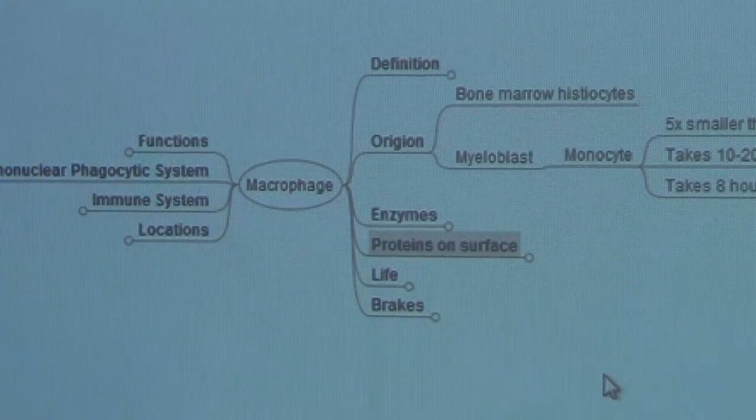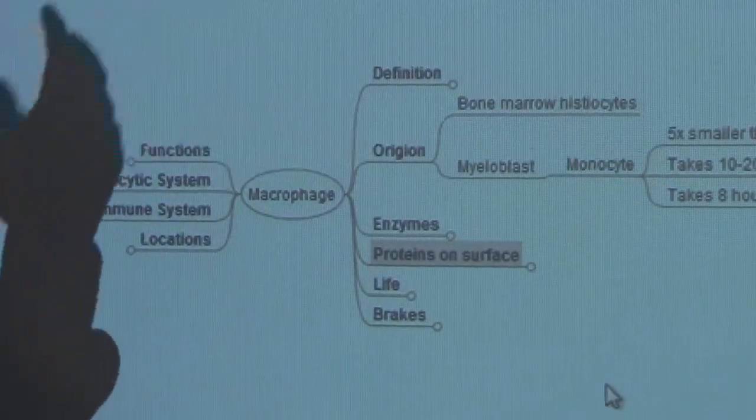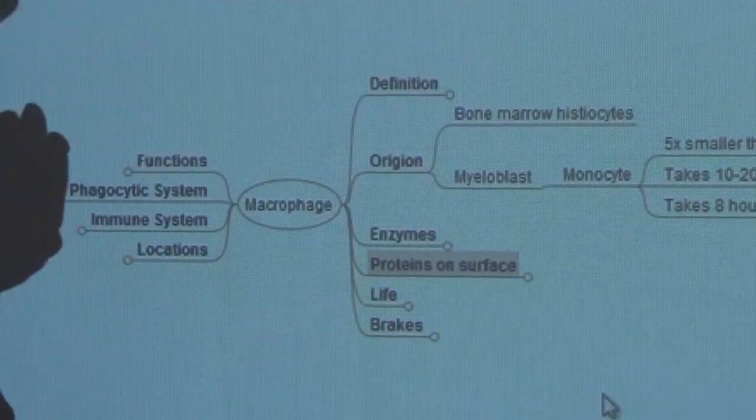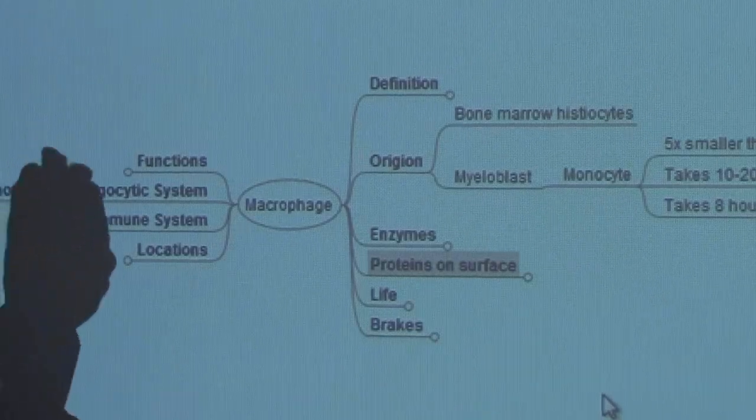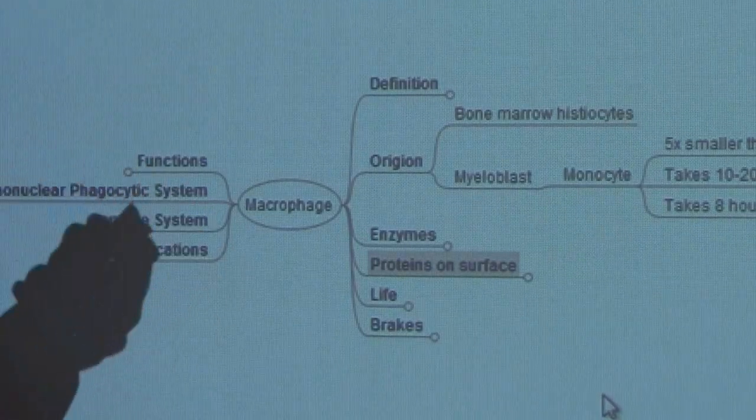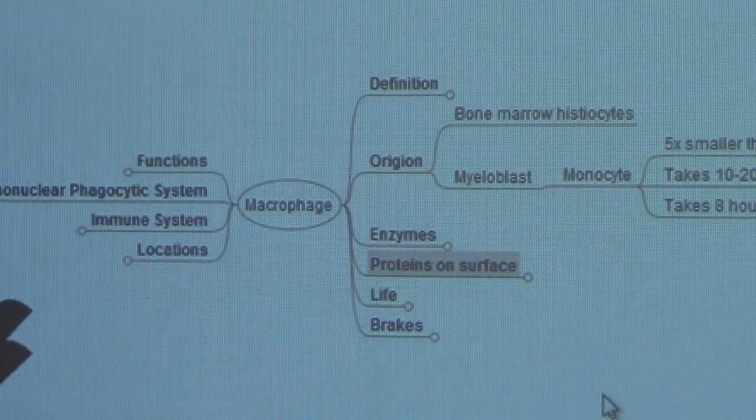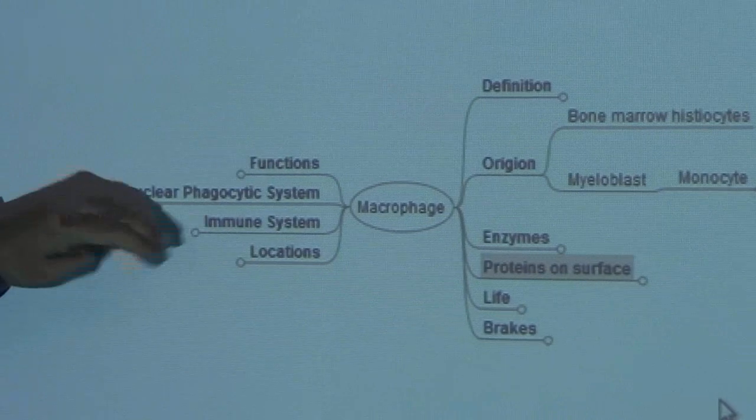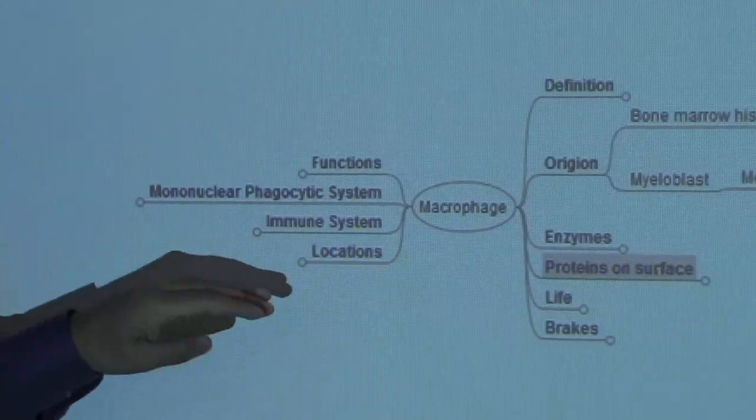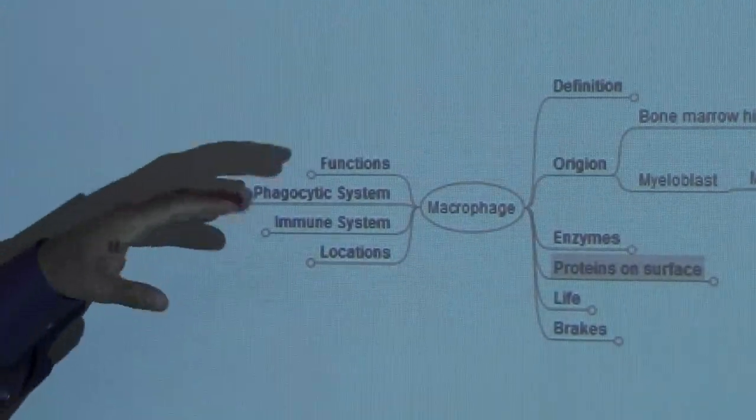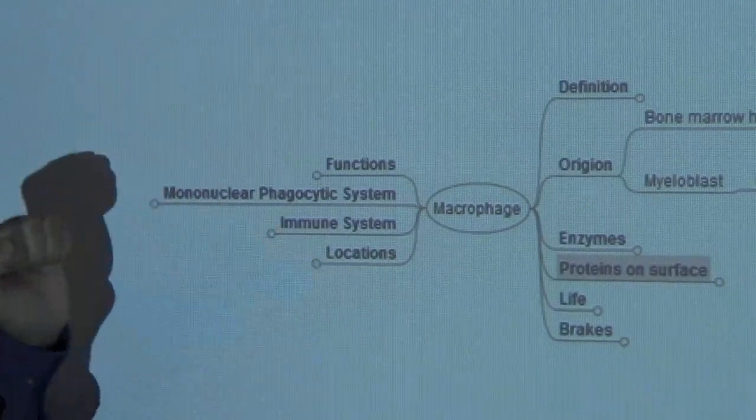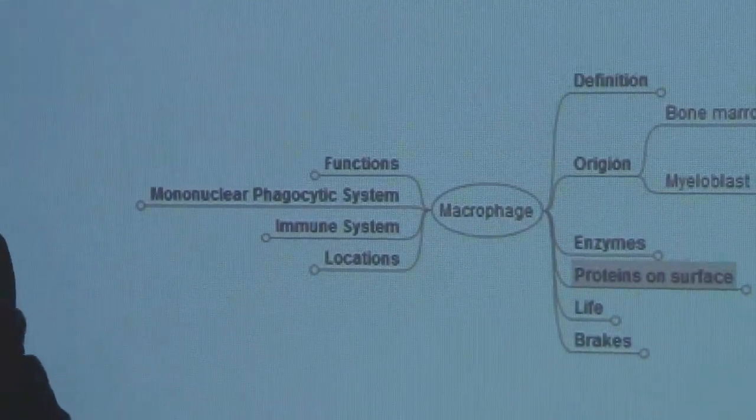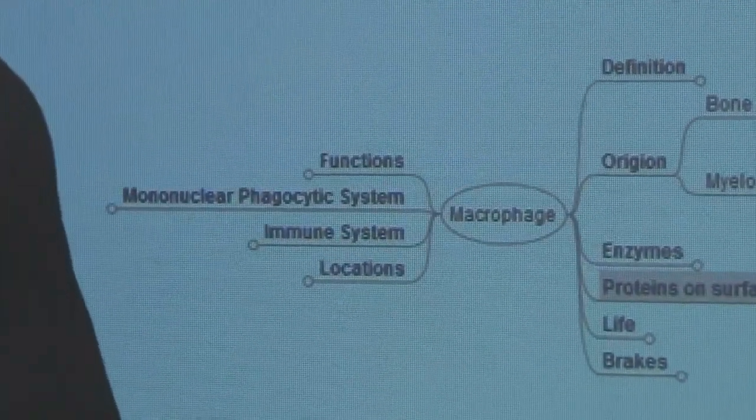This is a very unique concept about the macrophage: how does it go and live in a tissue, how does it stay inside the tissue, and when would it separate from the tissue and start working. Then we will talk about the functions, the mononuclear phagocytic system, the immune system with which macrophage is working, and the locations of the macrophages.